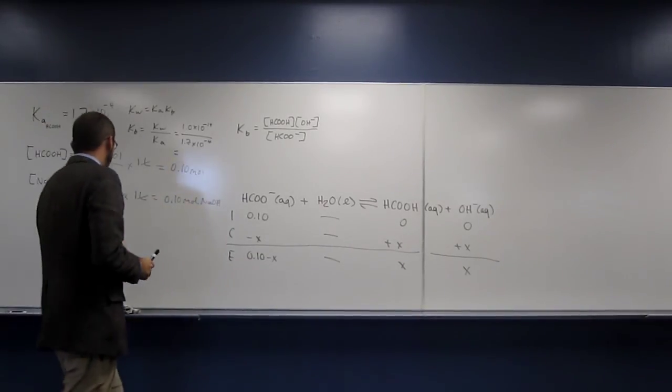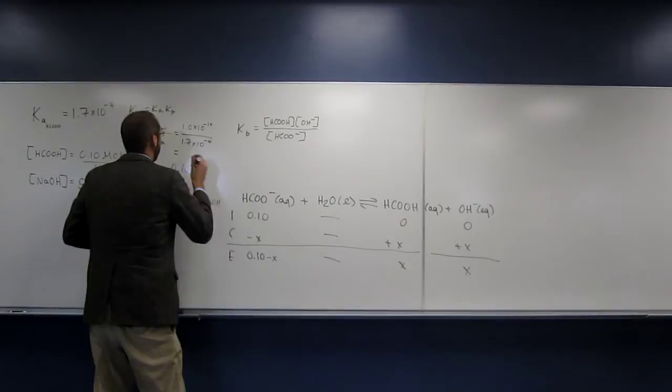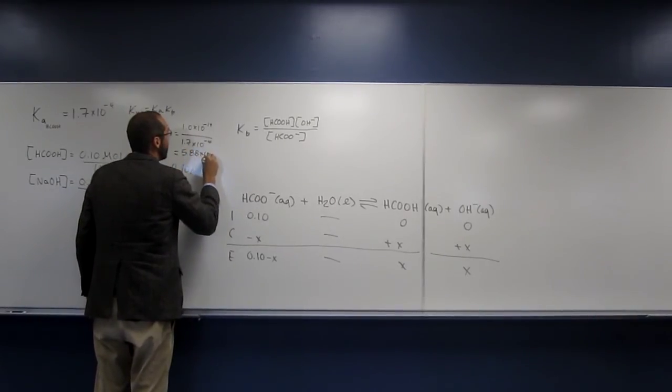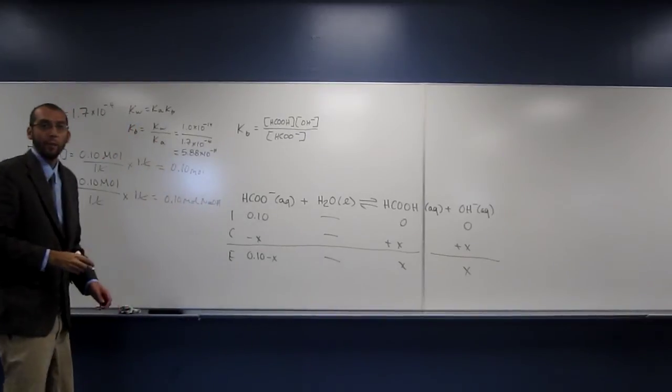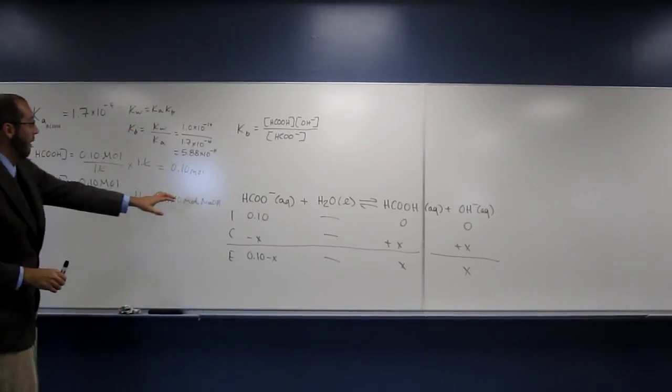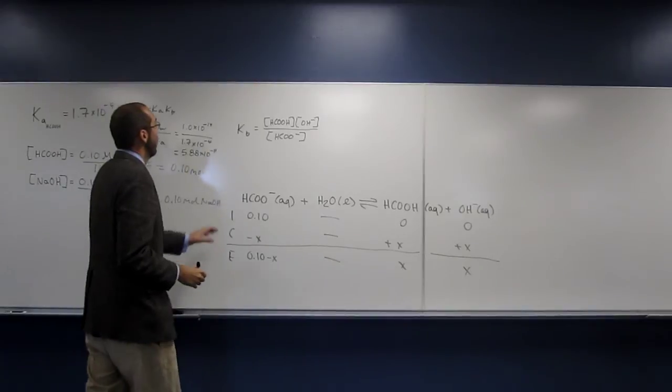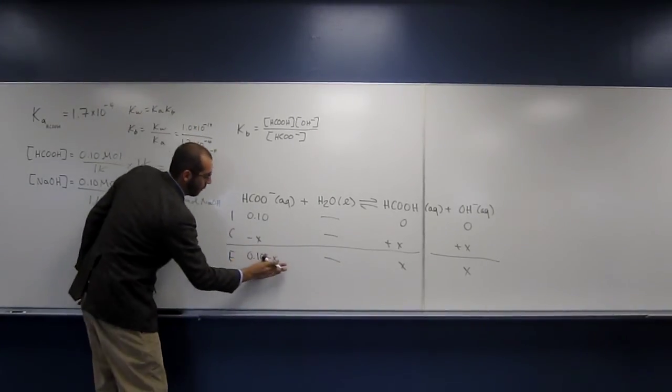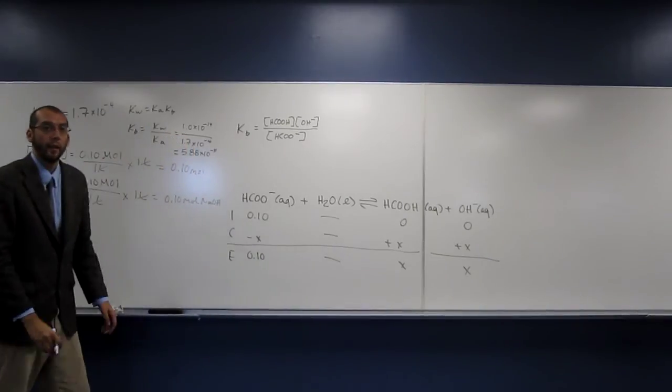So I get 5.88 times 10 to the negative 11th for the KB of the formic anion. So remember, that's a very small number, so we can do the 5% rule.